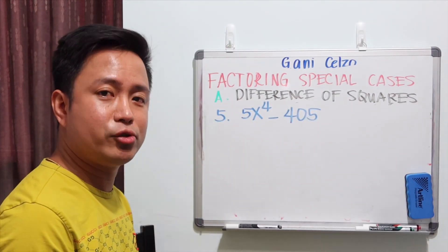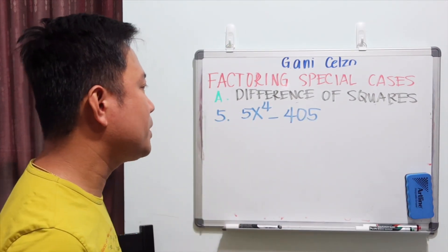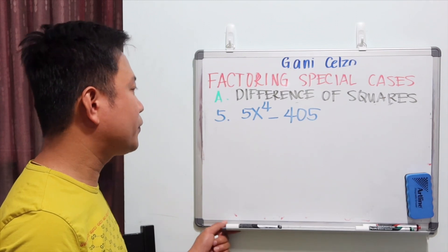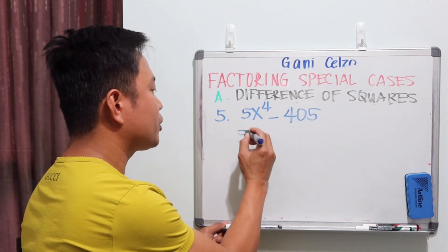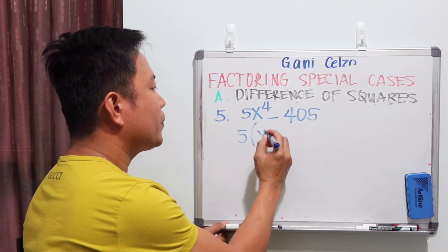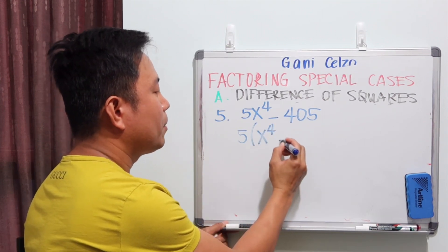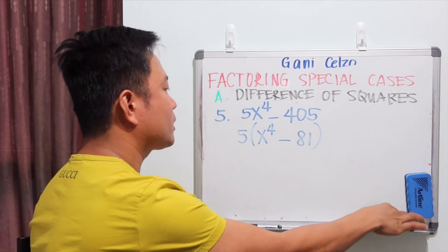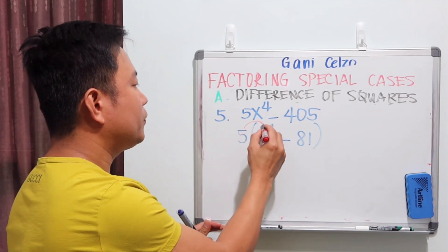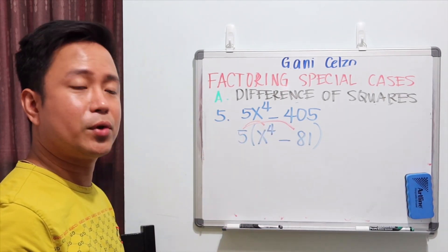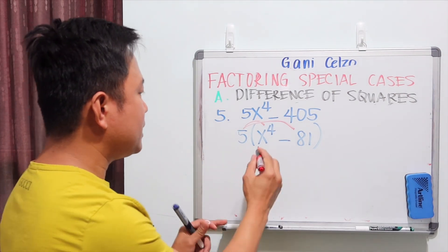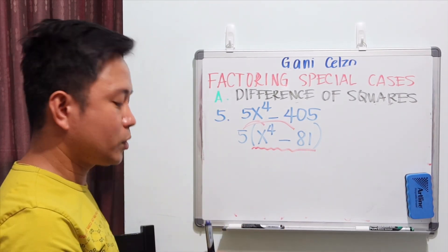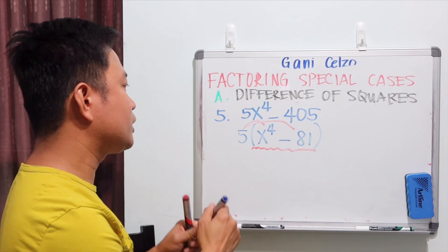Now let's try a more challenging problem: 5x⁴ - 405. There is a GCF of 5. Take out 5, leaving (x⁴ - 81) inside, because 5 times x⁴ is 5x⁴ and 5 times -81 is -405. This parentheses is a perfect square minus a perfect square, so we can factor using the difference of squares.